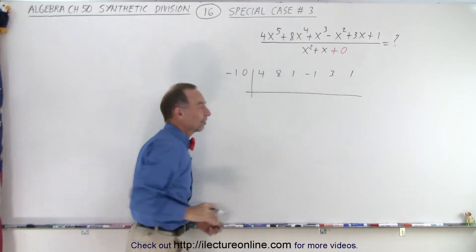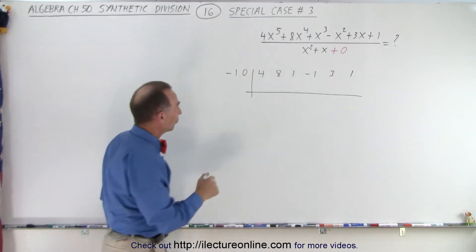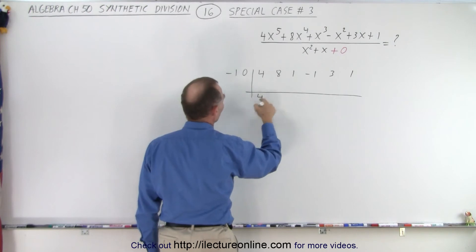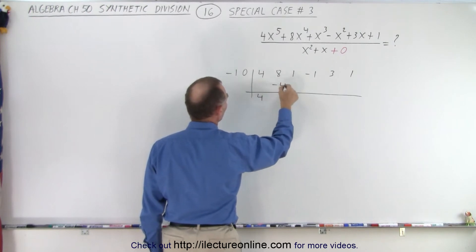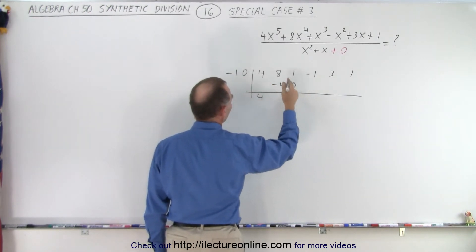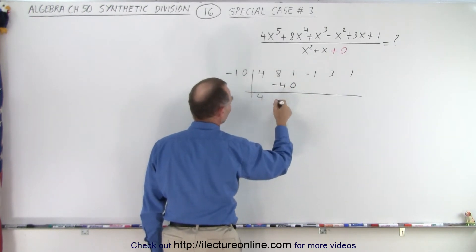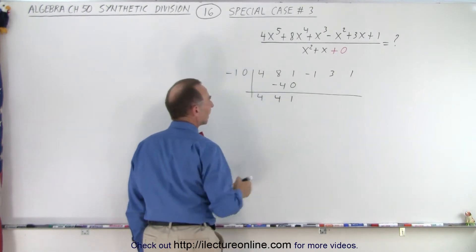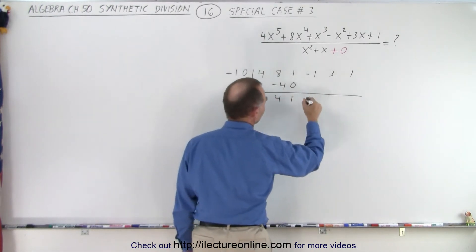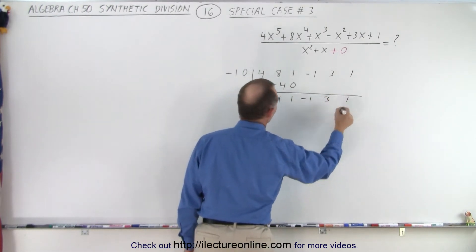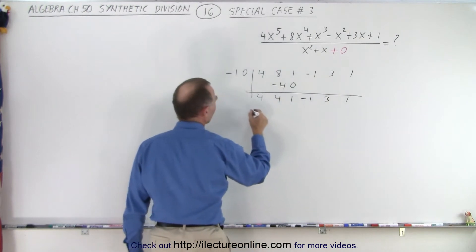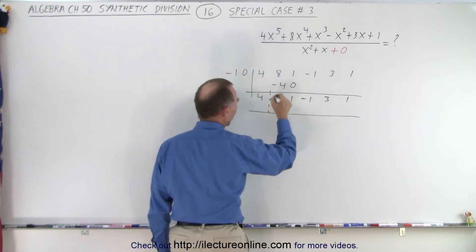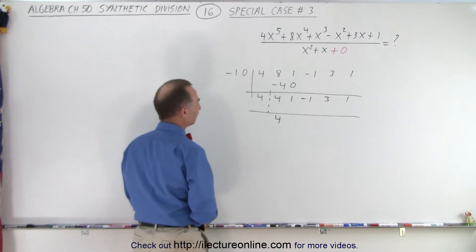We're taking two numbers at a time. First we bring down the 4, the negative 1 times 4 is negative 4, 0 times 4 is 0. Add the two numbers together, we get 4 and 1, and then we drop down the other numbers — minus 1, 3, and 1 — and draw another line.